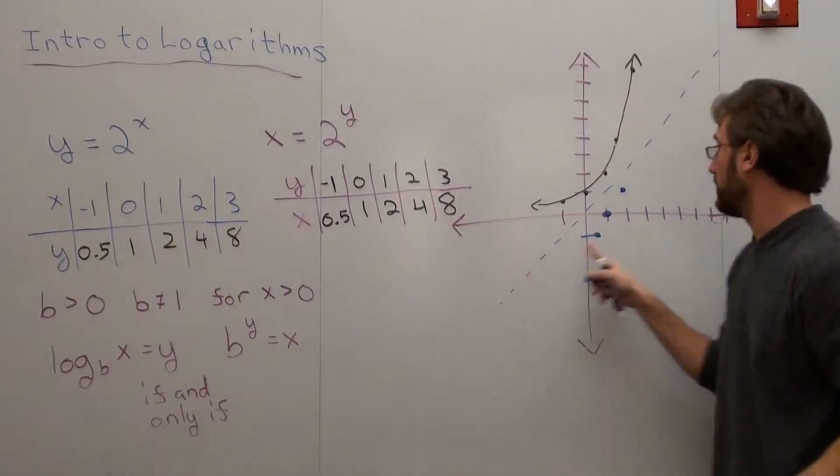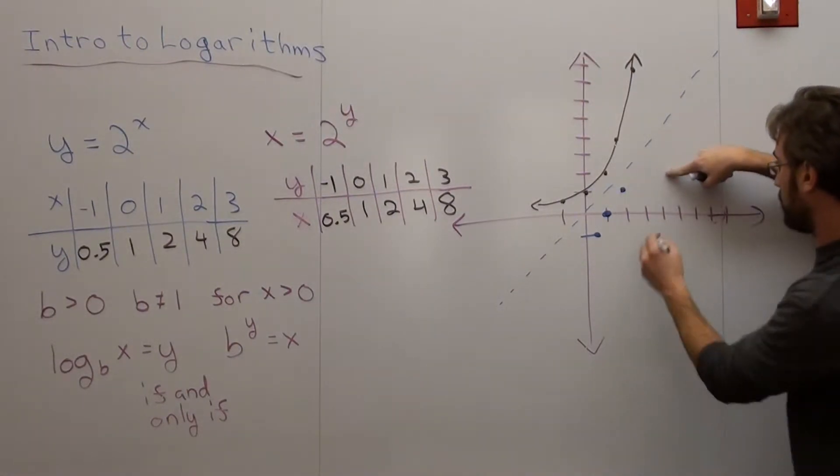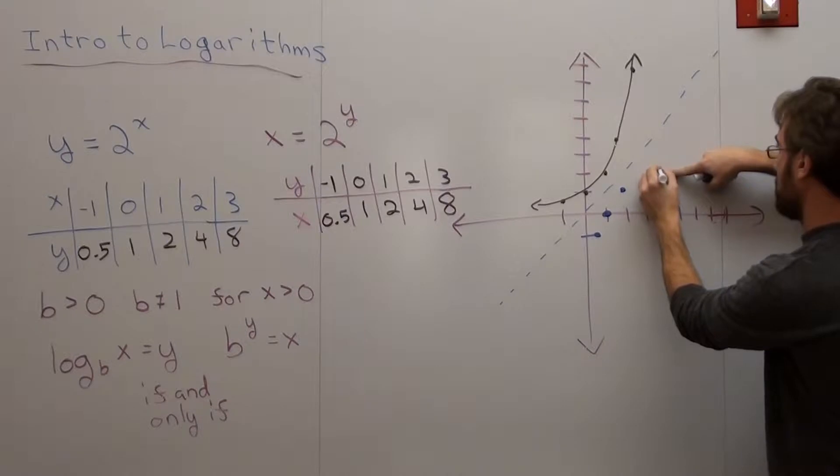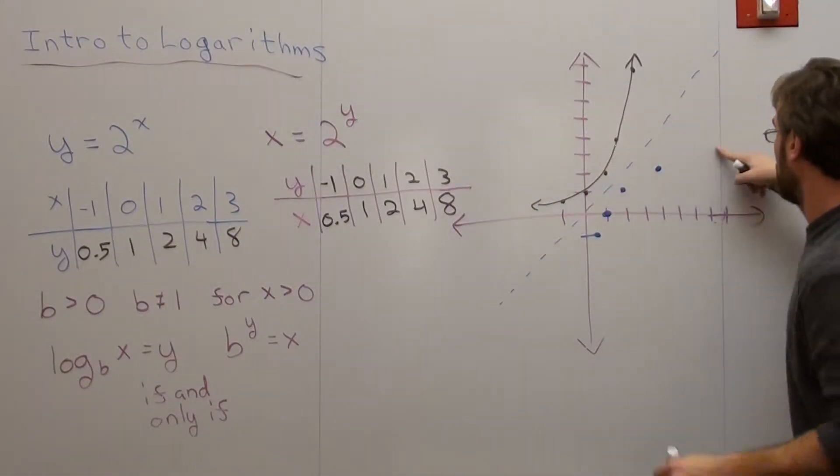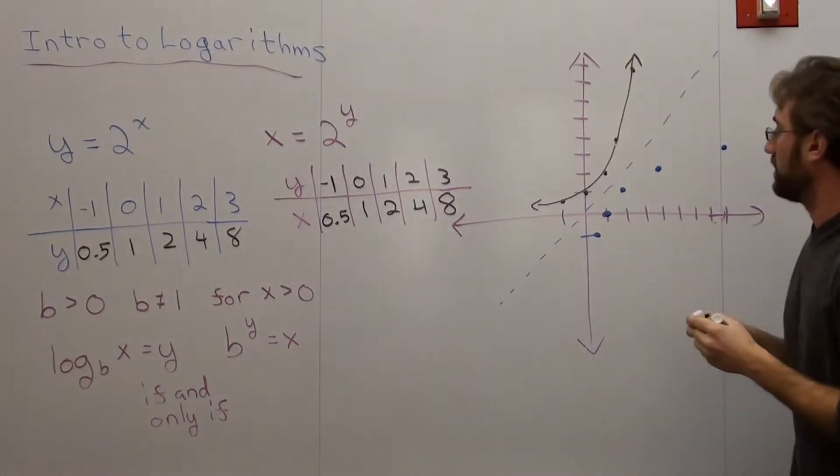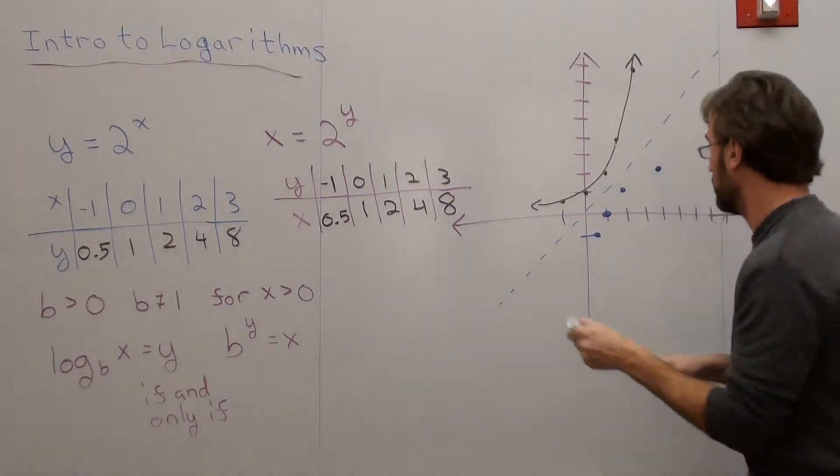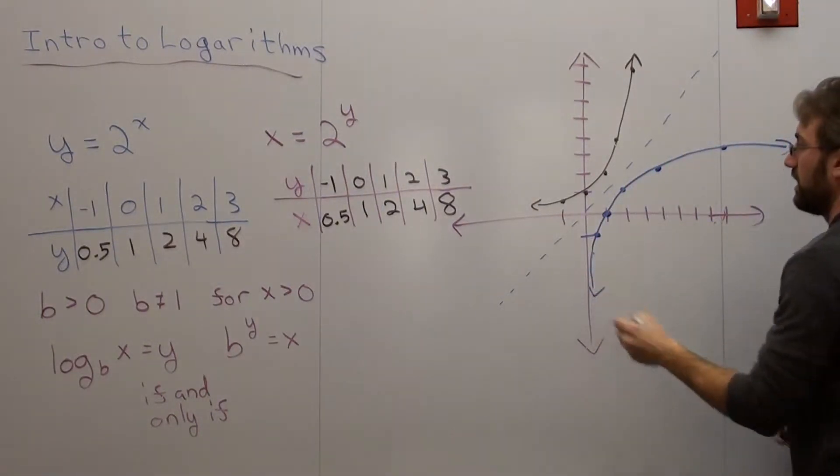And at 2 for y, which is right there, x is 4. And at 3 for y, x is 8. And if I graph that, I get something that looks like this.